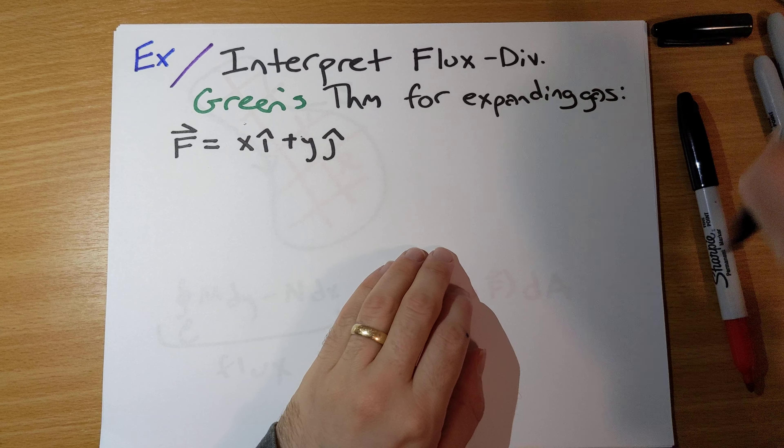To wrap up, I want to make an observation: the two versions of Green's theorem are actually equivalent to each other. The first version and the second version are equivalent. To show this, let's use the field G = −N i-hat + M j-hat and apply the circulation-curl Green's theorem.